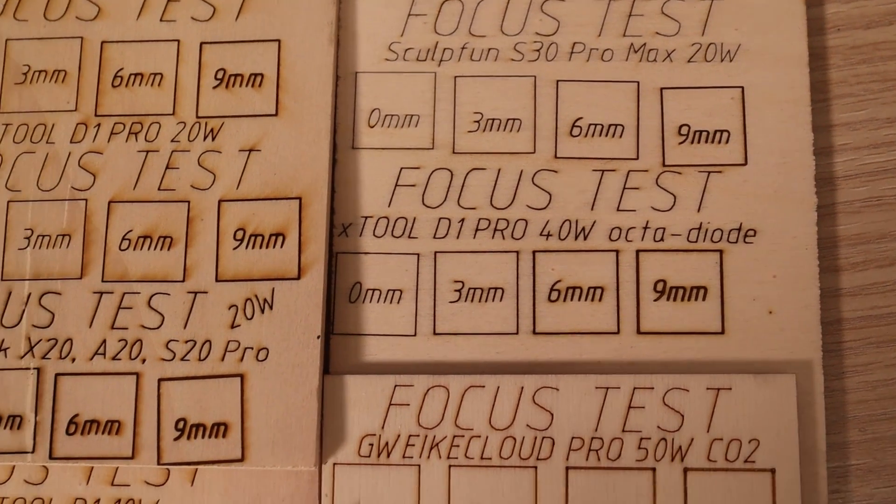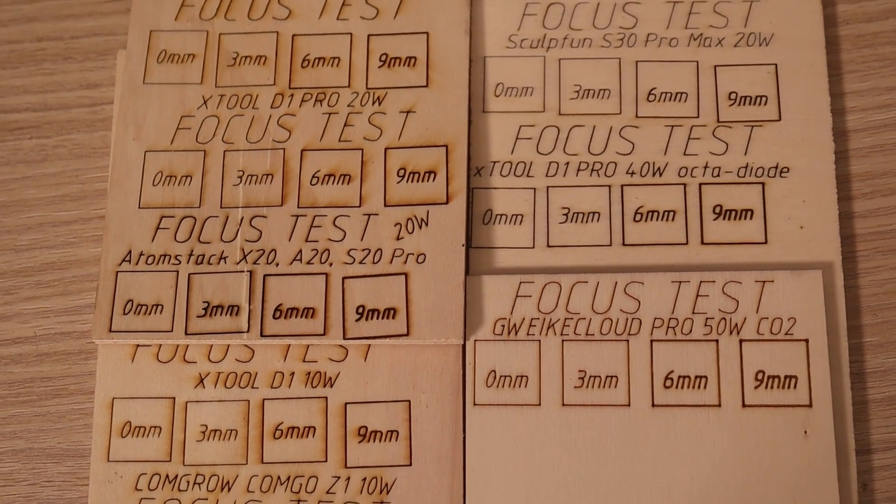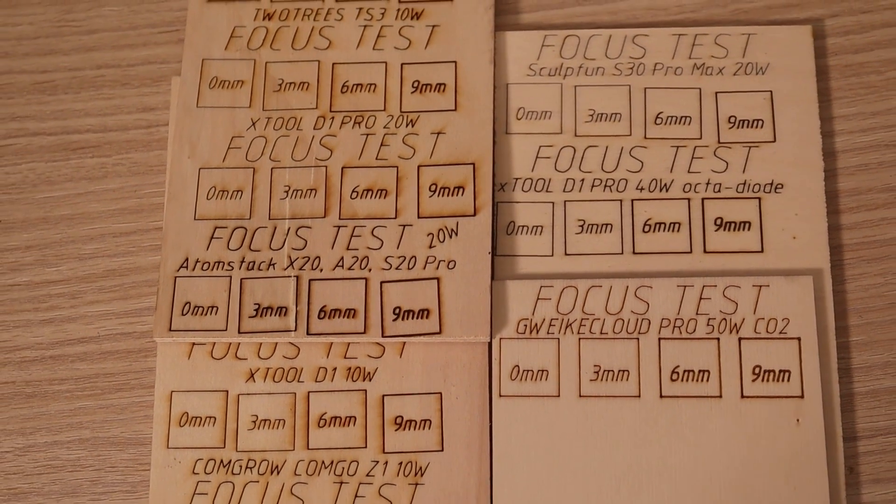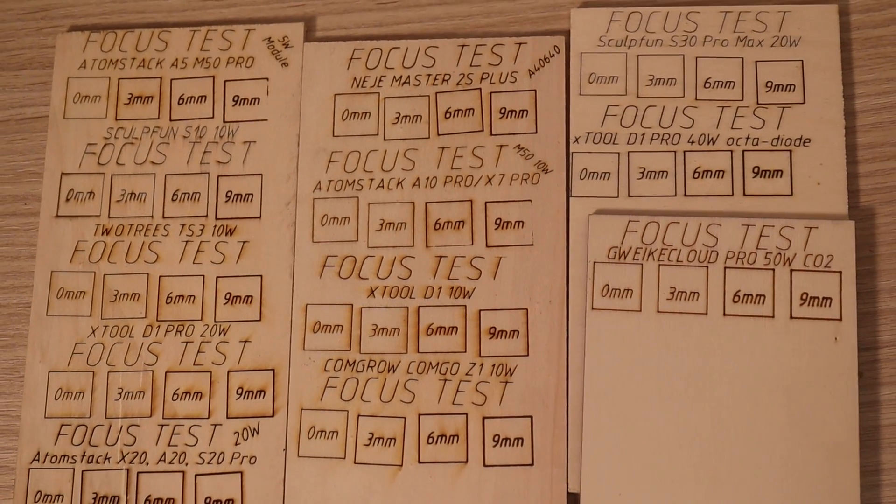Compared to other machines, the 40W D1 module has a slightly larger focus spot than the lower powered modules. This is expected since it is harder to focus 8 diodes. But the results are still very good.